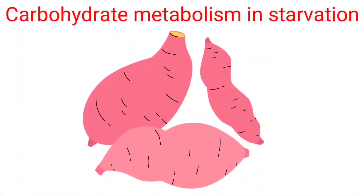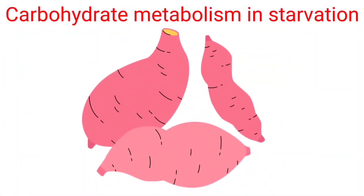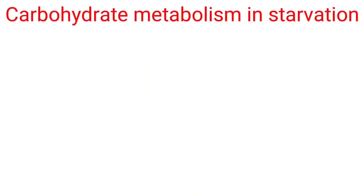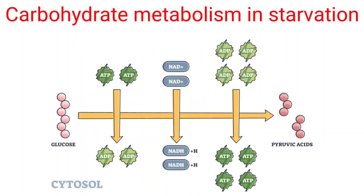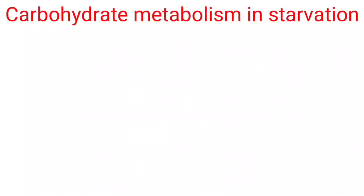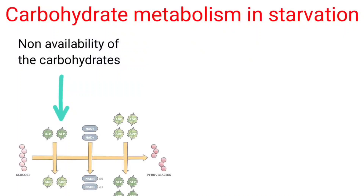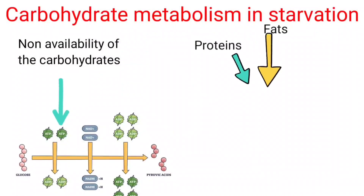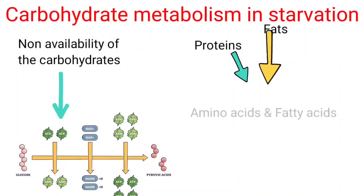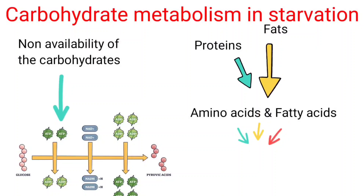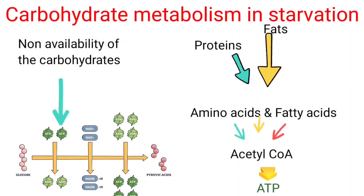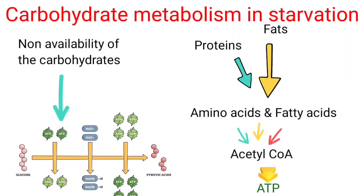During starvation, glucose is the primary energy source of the body, but when carbohydrates are not available, the body depends on alternative fuel sources like proteins and fats. Amino acids from proteins and fatty acids from fats are oxidized to produce energy.